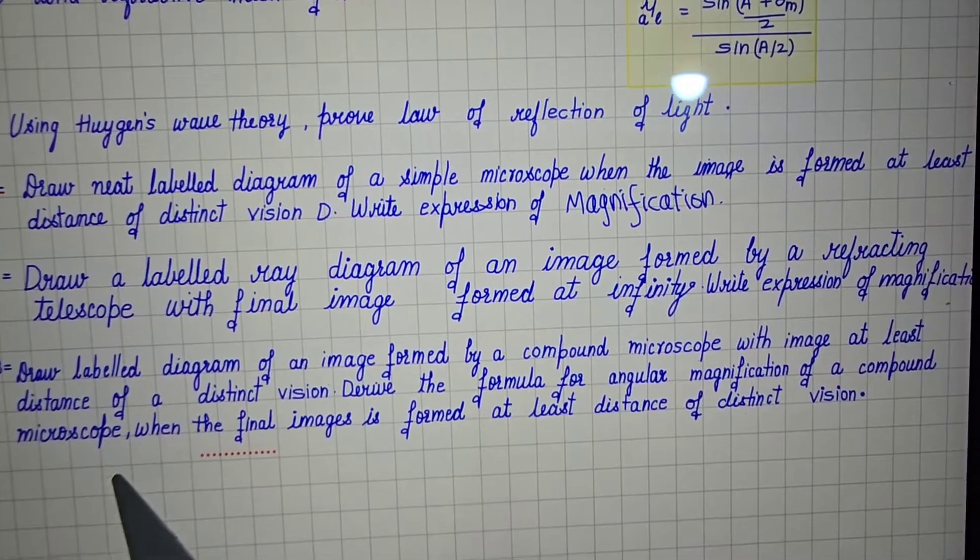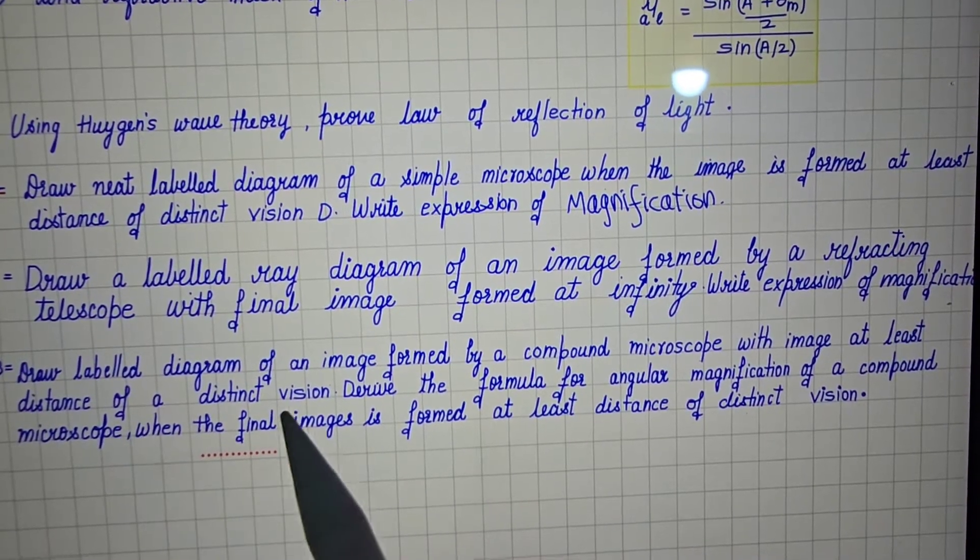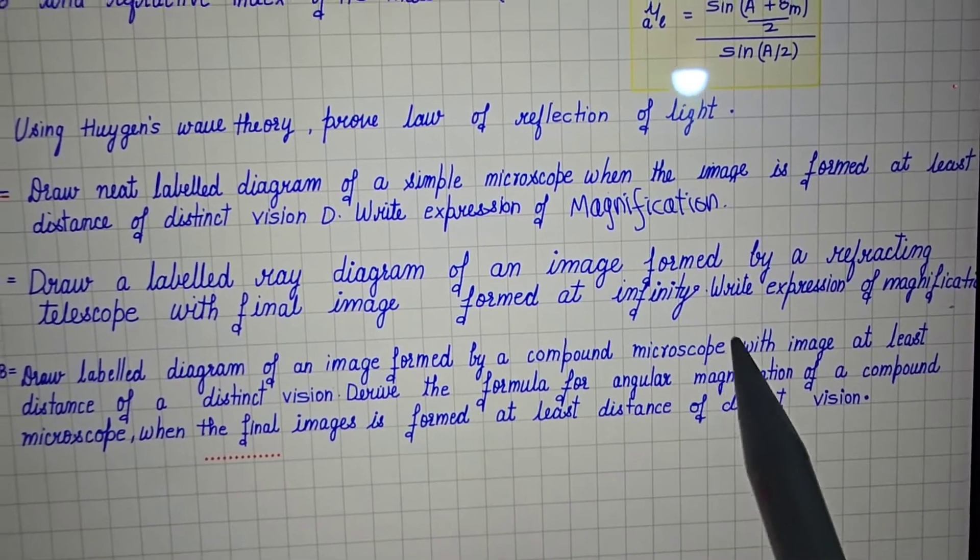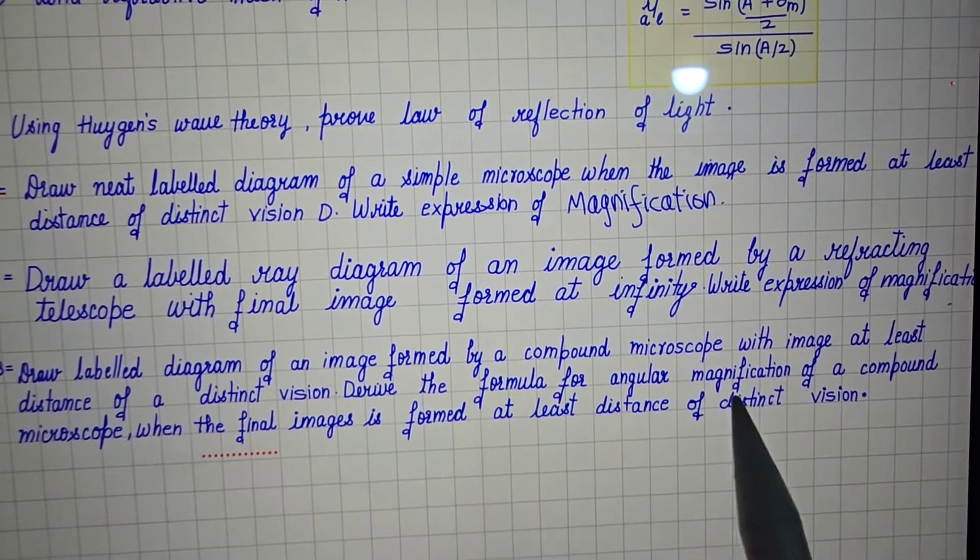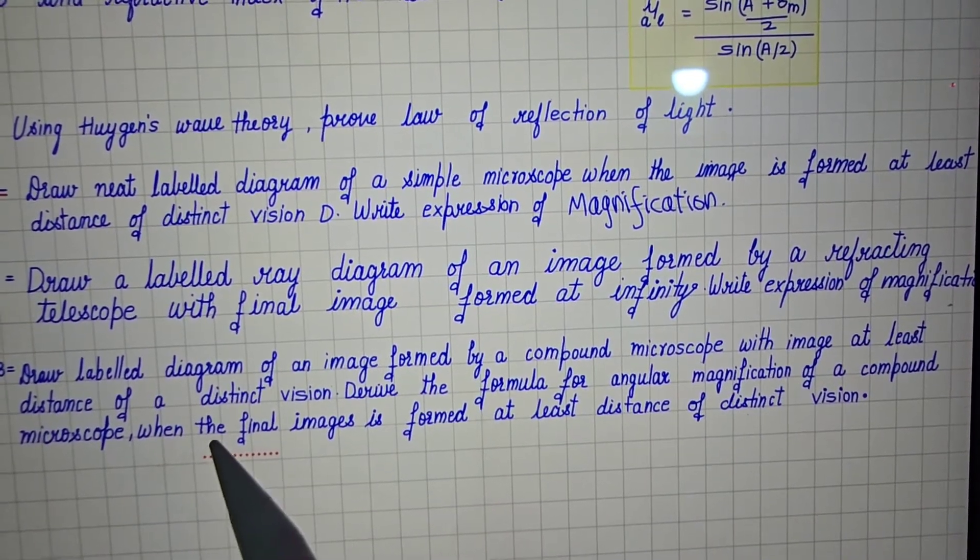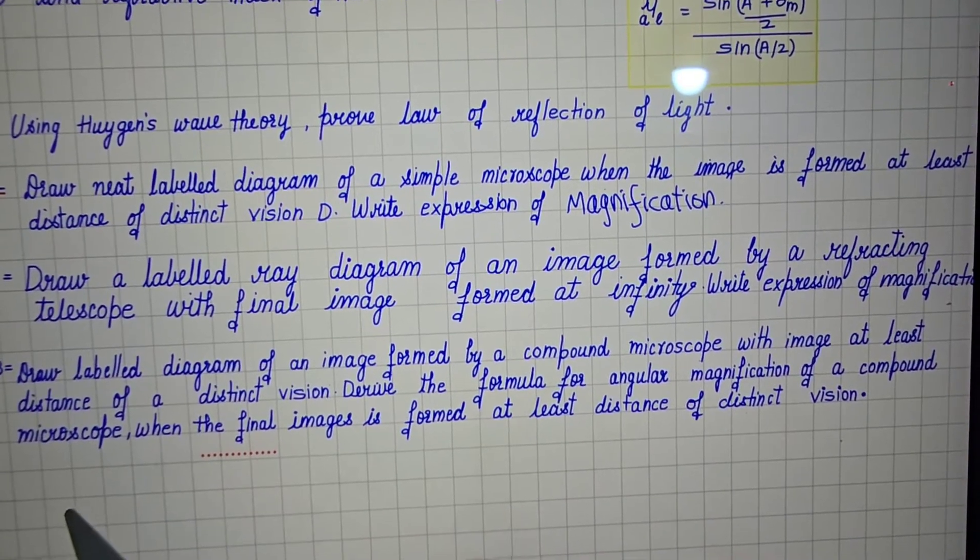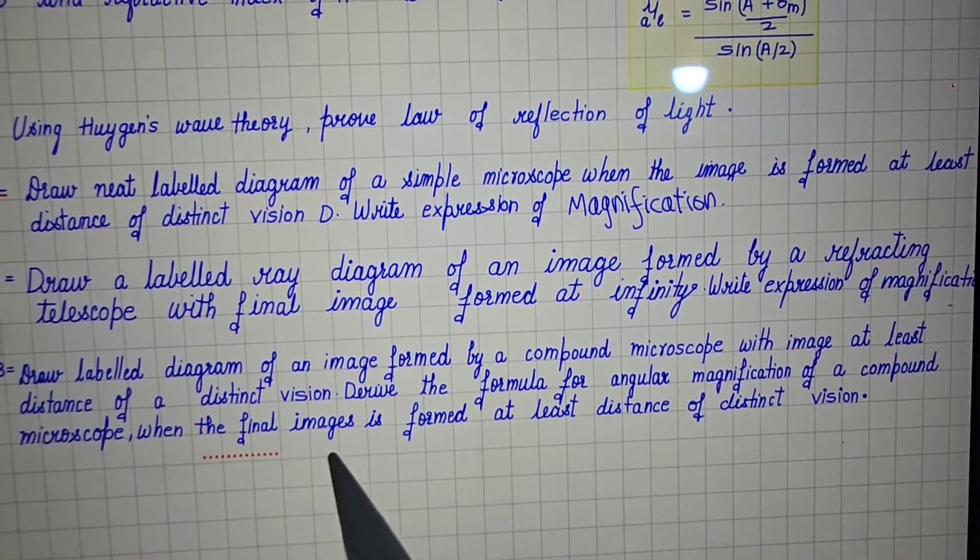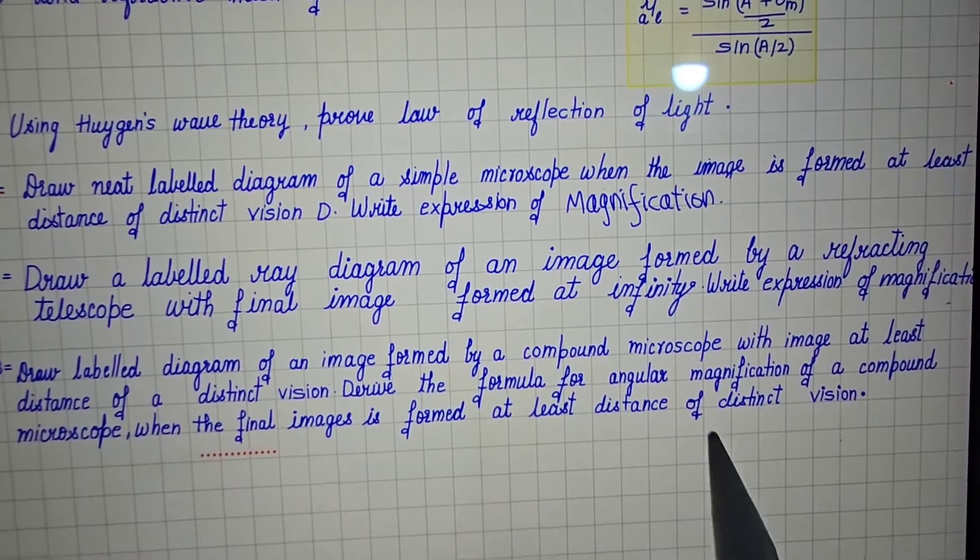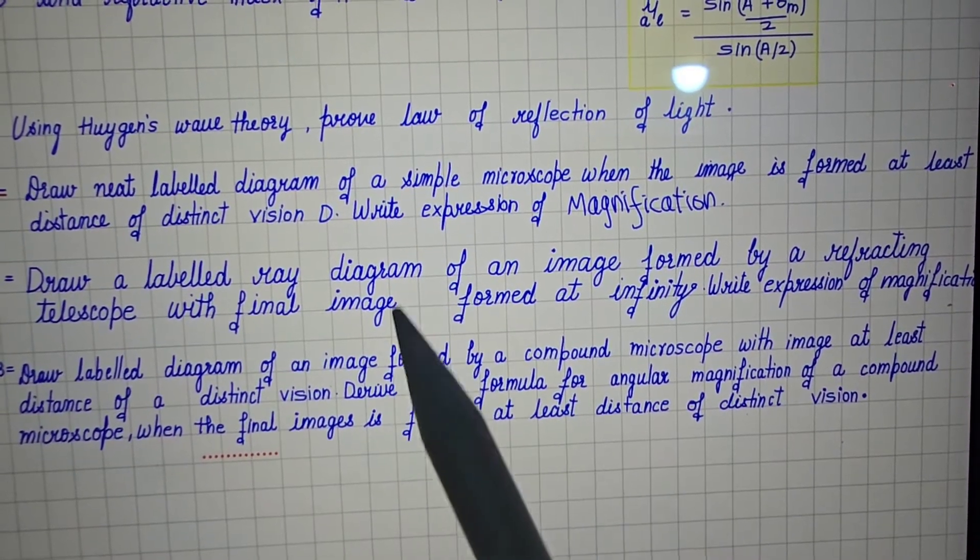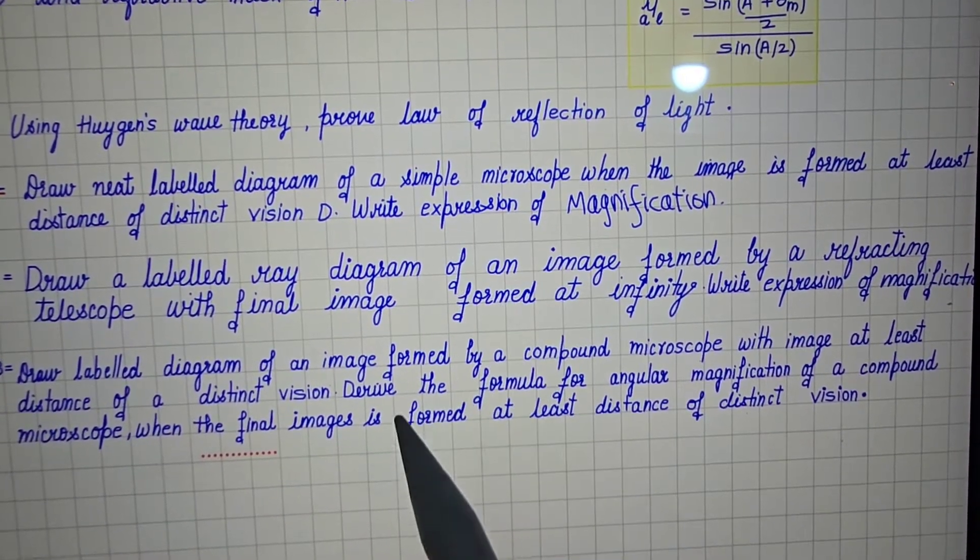And the third ray diagram is labeled diagram of image formation by a compound microscope with image at least distance of distinct vision. So these three ray diagrams and derivation of magnification expression.